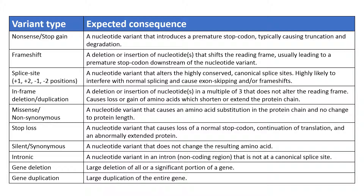Other variants, such as in-frame deletions or duplications and missense variants, are generally expected to result in an altered protein that may still be stable. Variants which are not expected to change a protein include silent and intronic variants, though these can impact splicing. Finally, whole gene duplications are associated with disease if there is evidence of triplosensitivity for that gene, which is not the same as gain of function.